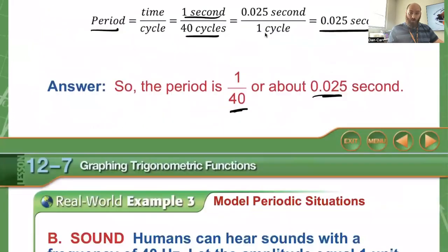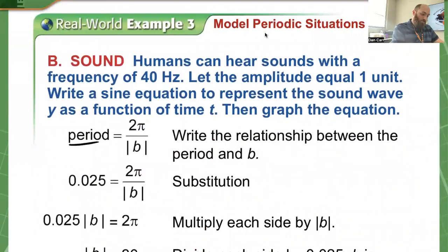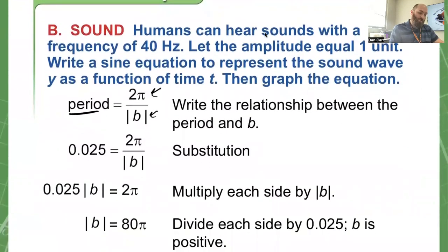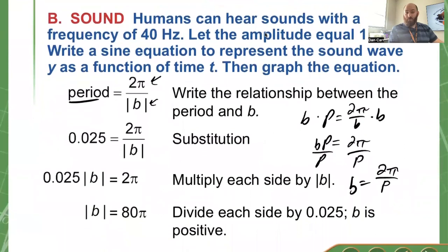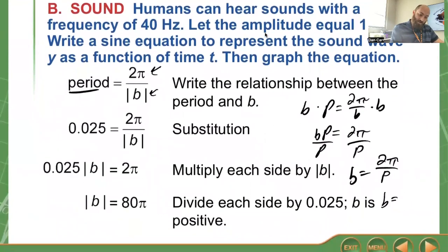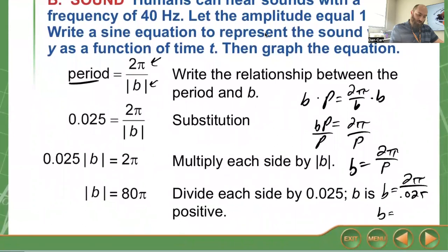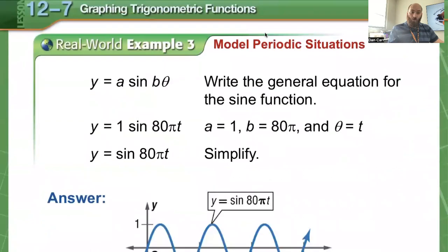Since that's our period value, instead of period equals 2 pi over b, I'm going to change this. I like to do 2 pi over b, multiply both sides by b, so bp equals 2 pi, then divide by period. So b equals 2 pi over period. In this case, I take 2 pi divided by my period, which is 0.025. When I simplify it, I get b equals 80 pi. That's the b value going into my formula.